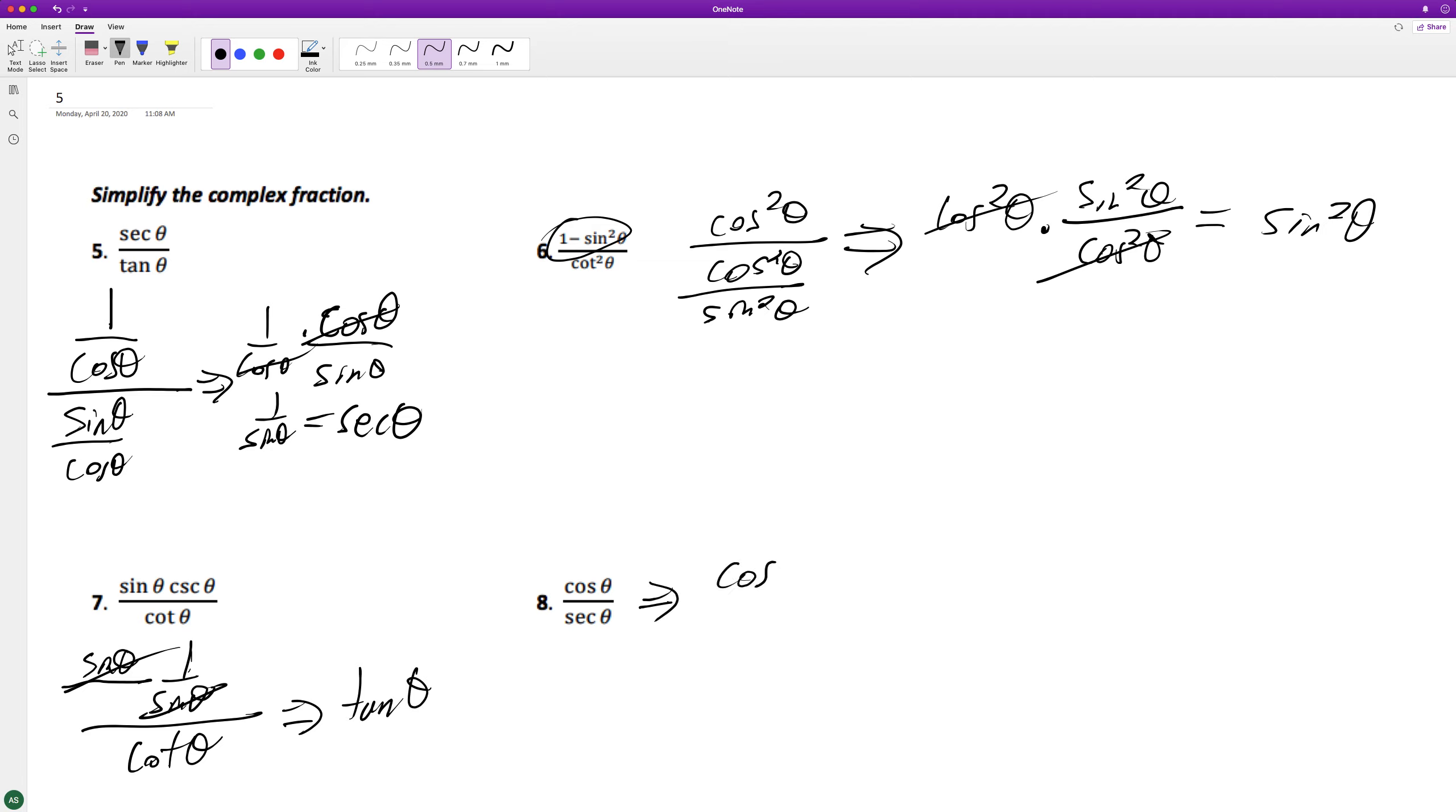Here we have cosine theta over 1 over cosine theta, cosecant squared theta, or cosine squared theta.